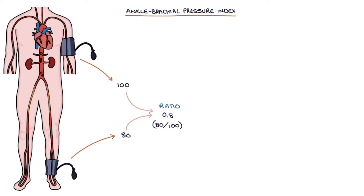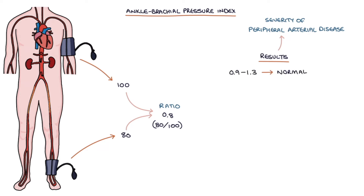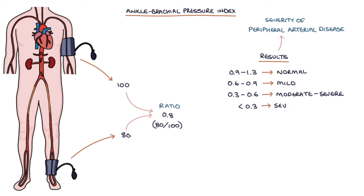The ABPI results can indicate the severity of peripheral arterial disease. A result of 0.9 to 1.3 is normal; 0.6 to 0.9 indicates mild peripheral arterial disease; 0.3 to 0.6 indicates moderate to severe peripheral arterial disease; and less than 0.3 indicates severe disease to critical ischemia. An ABPI above 1.3 can indicate calcification of the arteries, making them difficult to compress, which is more common in diabetic patients.